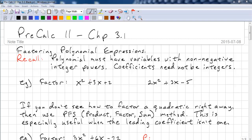This is Pre-Calc 11, Chapter 3.1. This time we're looking at factoring polynomial expressions. You need to know what a polynomial expression is, so recall that they must have variables with non-negative integer powers. The power here is implied to be 1. However, the coefficients do not need to be integers, but they usually are.